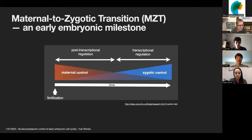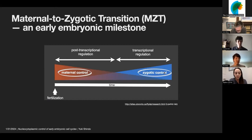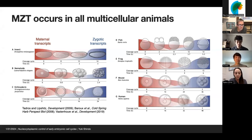To do that, we study maternal to zygotic transition, or MZT, as a model. The earliest stages of development depend on components provided by the mother, but as development progresses, zygotic control kicks in to take over the embryonic programs. This process is called maternal to zygotic transition, and MZT occurs in essentially all multicellular animals, but how this transition occurs at the right timing has been a fundamental question in cell and developmental biology.